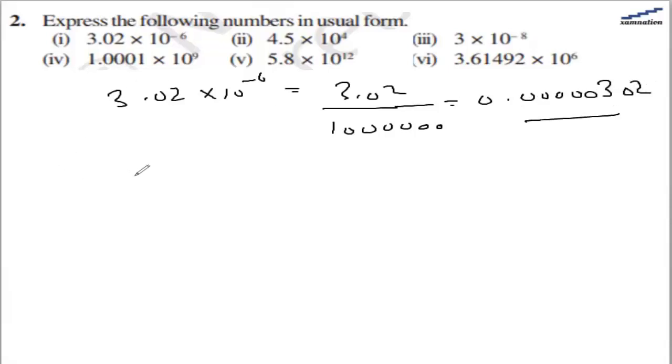For the second part, we have 4.5 × 10^4, and that will be 45,000.